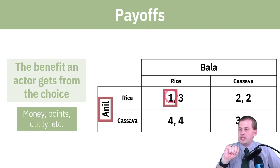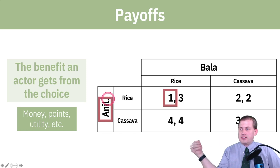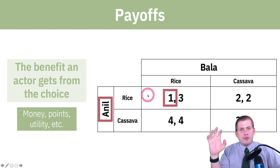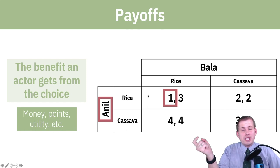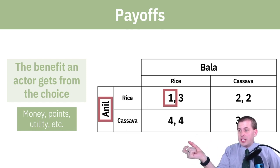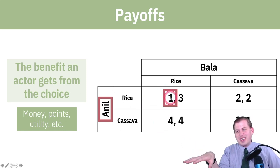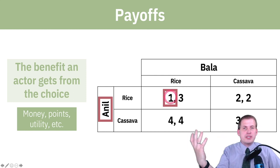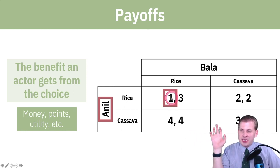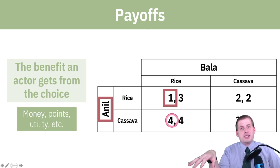The way you read these tables is typically you'll see two numbers. The first number corresponds to the player on the rows — so Anil, if he plants rice, he'll get one util of benefit, one happiness point. That's because Anil is really good at growing cassava; that's his specialty. If he had to grow rice, he could do it, but he's not going to be super happy about it — so he gets one happiness point, or you could say $100 of profit. This is just saying one unit of happiness versus four units if he could grow cassava.